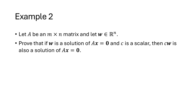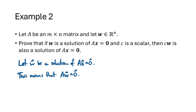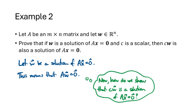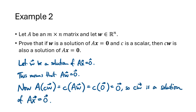Here's an example. Let A be an m by n matrix and w a vector in R^n. We want to prove that if w is a solution of Ax equals 0 and c is a scalar, then cw is also a solution of Ax equals 0. We start by writing: let w be a solution of Ax equals 0, which means Aw equals 0. To show cw is a solution, we compute A(cw). Using the compatibility property, we rewrite this as c times Aw. Since Aw equals 0, this becomes c times 0, which equals the zero vector. Thus A(cw) equals 0, so cw is a solution of Ax equals 0.